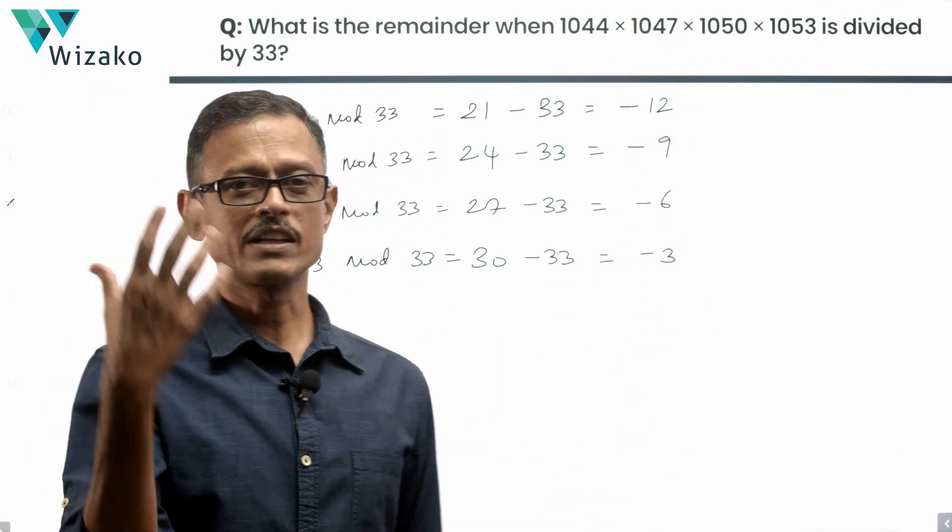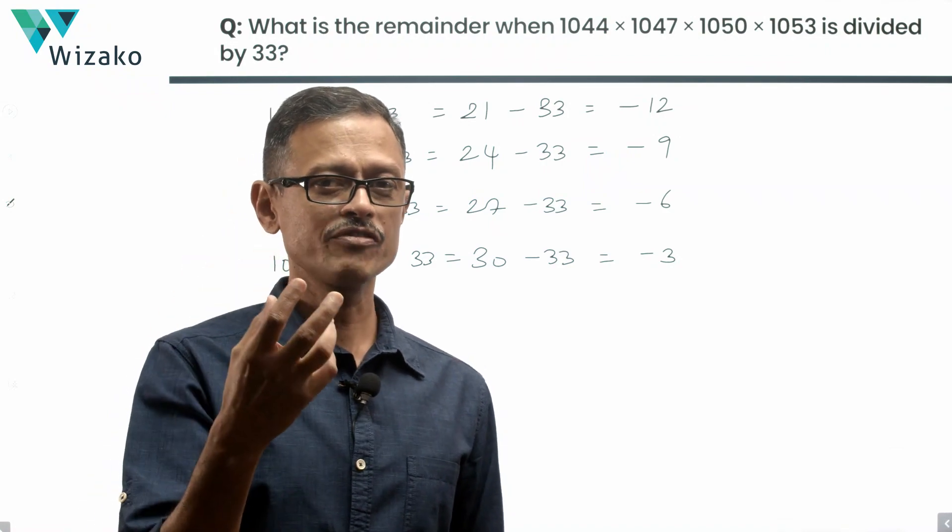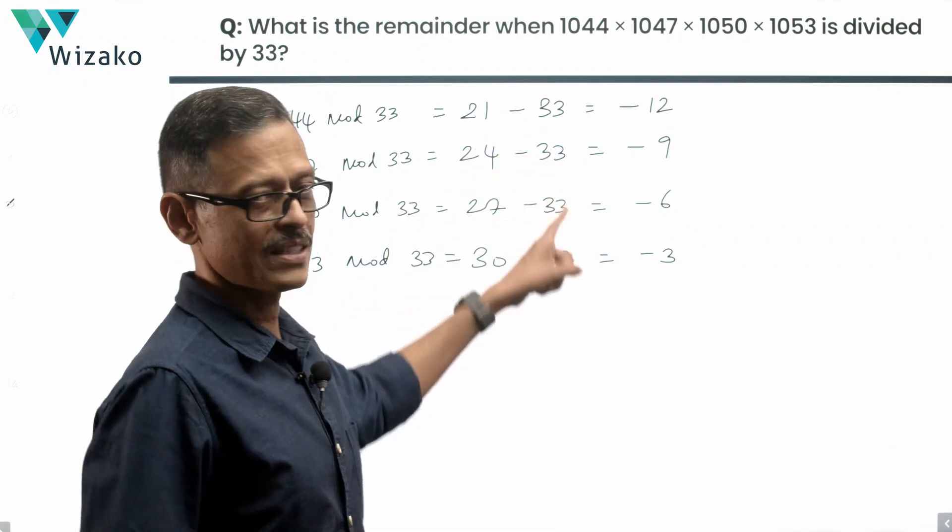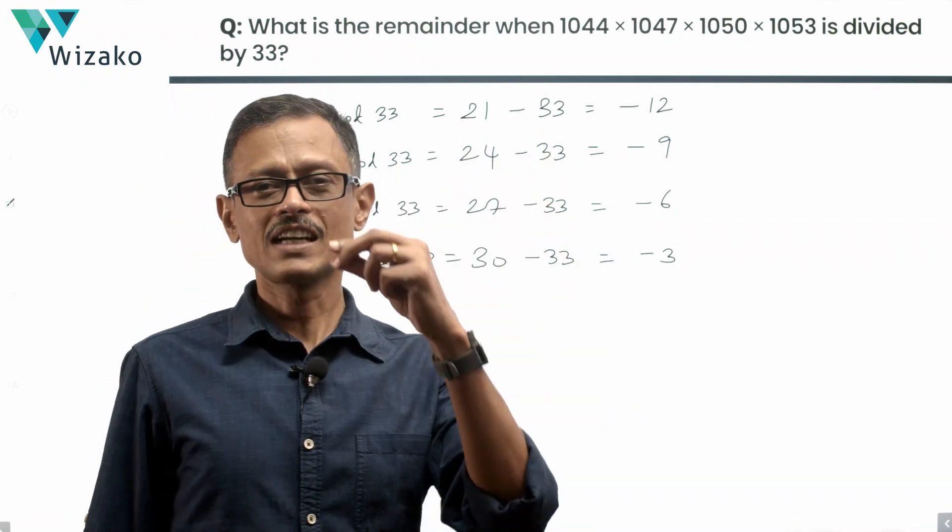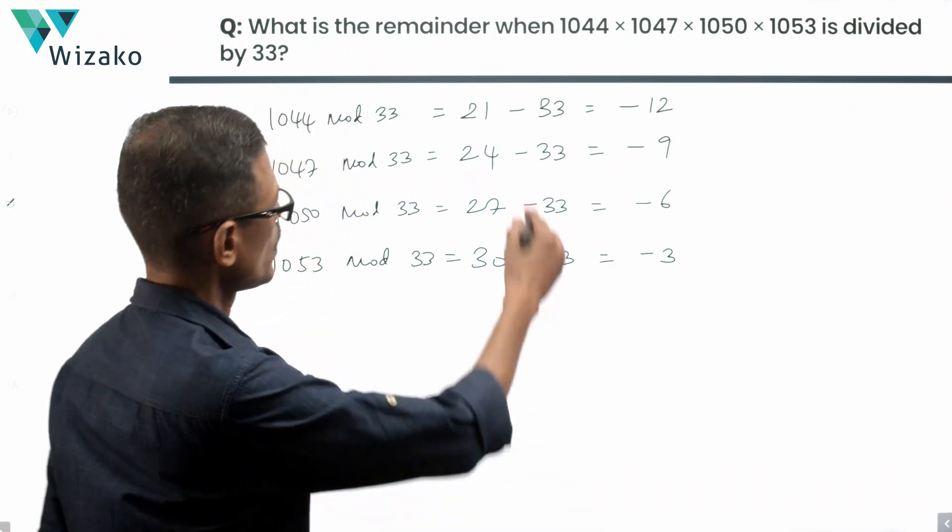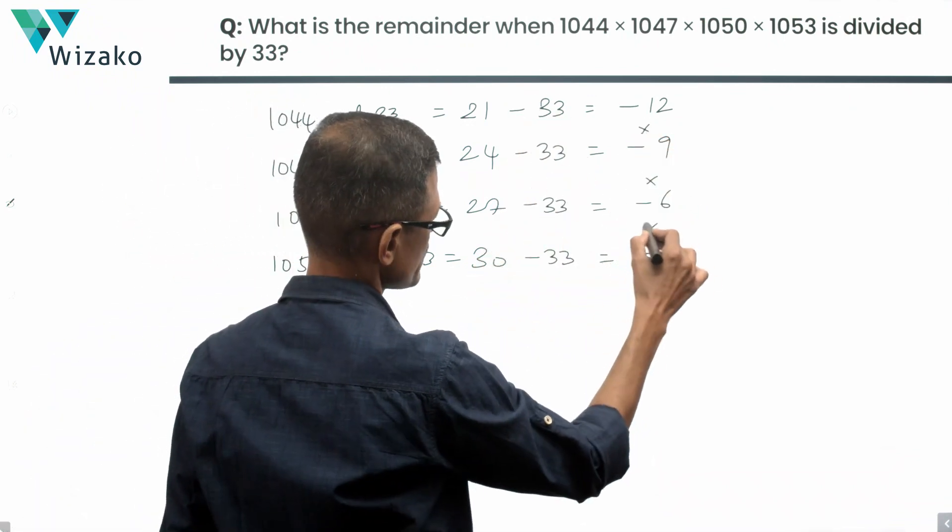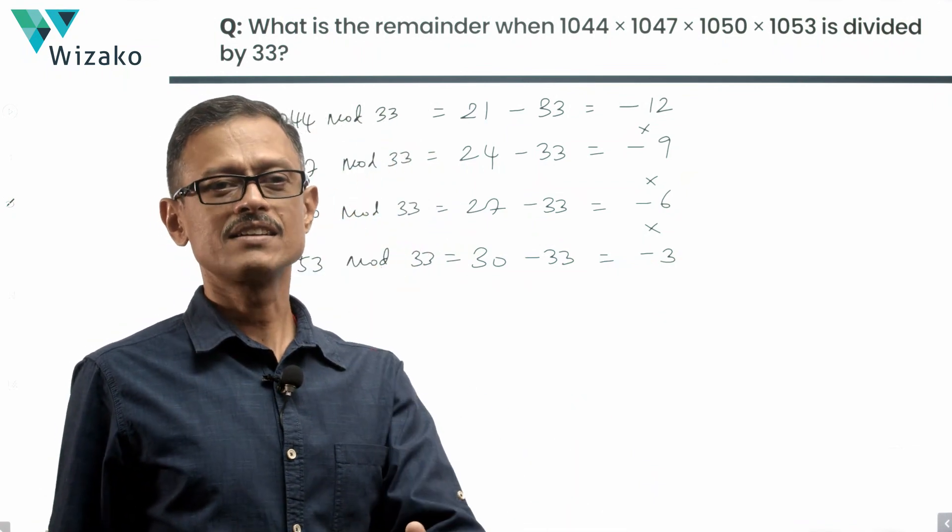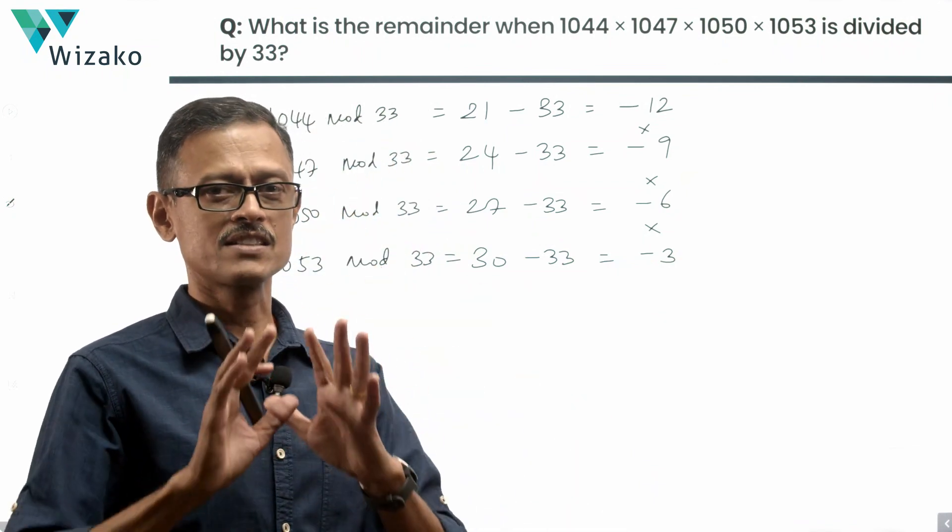Whenever you find the magnitude of the actual remainder to be a large value, by subtracting the divisor once from it, if that brings down the magnitude to make calculations easy, let's just do that. The final remainder is going to be the product of this. Product of four negative numbers will be positive. If that value is greater than 33, we'll divide it once more by 33.